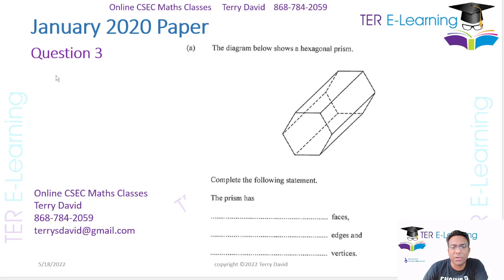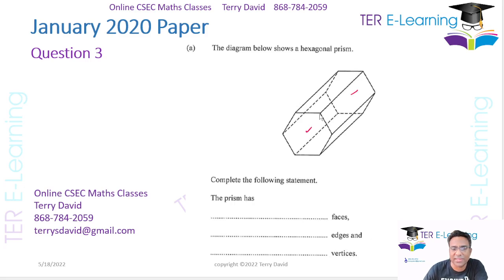So this third question — we have a hexagonal prism, and they are asking us to complete this statement: how many faces do we have? If you look at the shape, we have one hexagon here and another hexagon here, so that's two faces. And then we have 1, 2, 3, 4, 5, 6 more. So that's going to give me a total of eight faces.